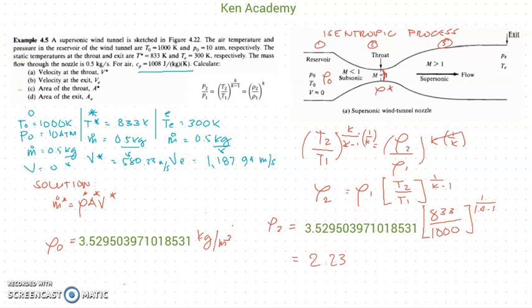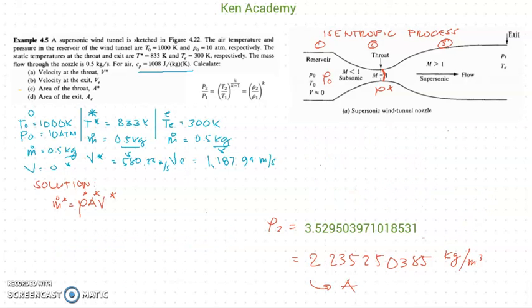I get my density at the throat, which is 2.23520385 kilograms per cubic meter. Now store that in your calculators; we will be using that to solve for the area at the throat in the next video.